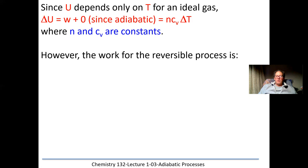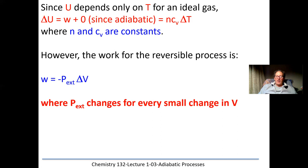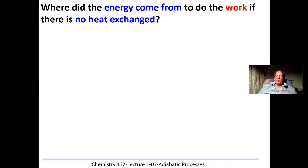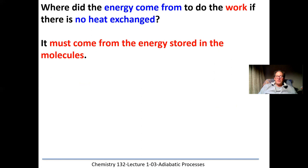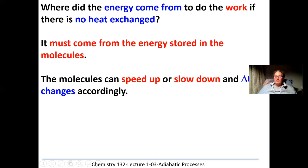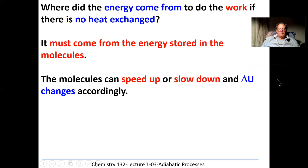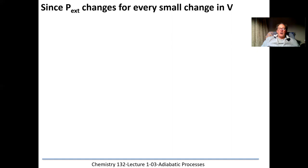The work for a reversible process equals minus p_external times delta V, and those external pressure changes are very small for every small change in volume. Where does the energy come from to do the work if there's no heat? The energy has to come from the molecules themselves — stored inside those molecules. As they move around, the molecules speed up or slow down, and delta U changes accordingly.